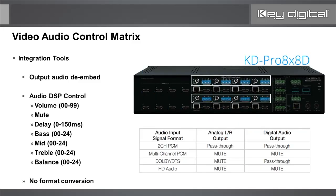The KD Pro 8x8D has audio DSP features per output: volume is discretely controlled or via incremental up/down, muting control, delay up to 150 milliseconds (perfect for integrating with distributed audio systems), 3-band EQ (bass, mid, treble), and left/right balance. There is no format conversion between two-channel and 5.1, so no up or down format conversions.